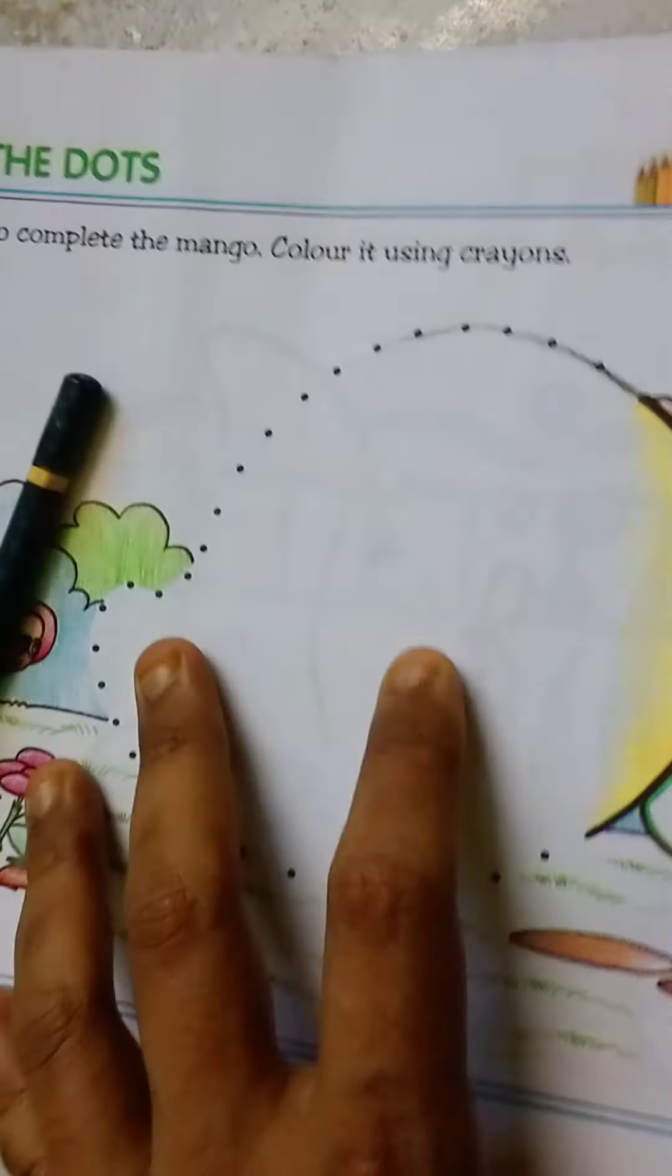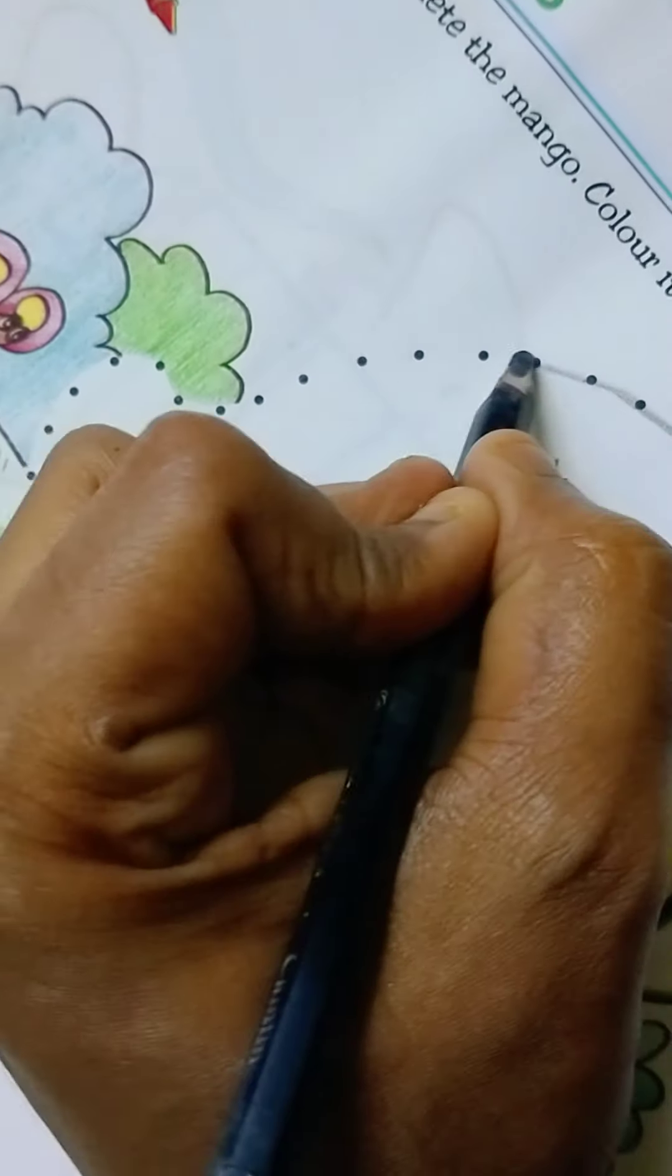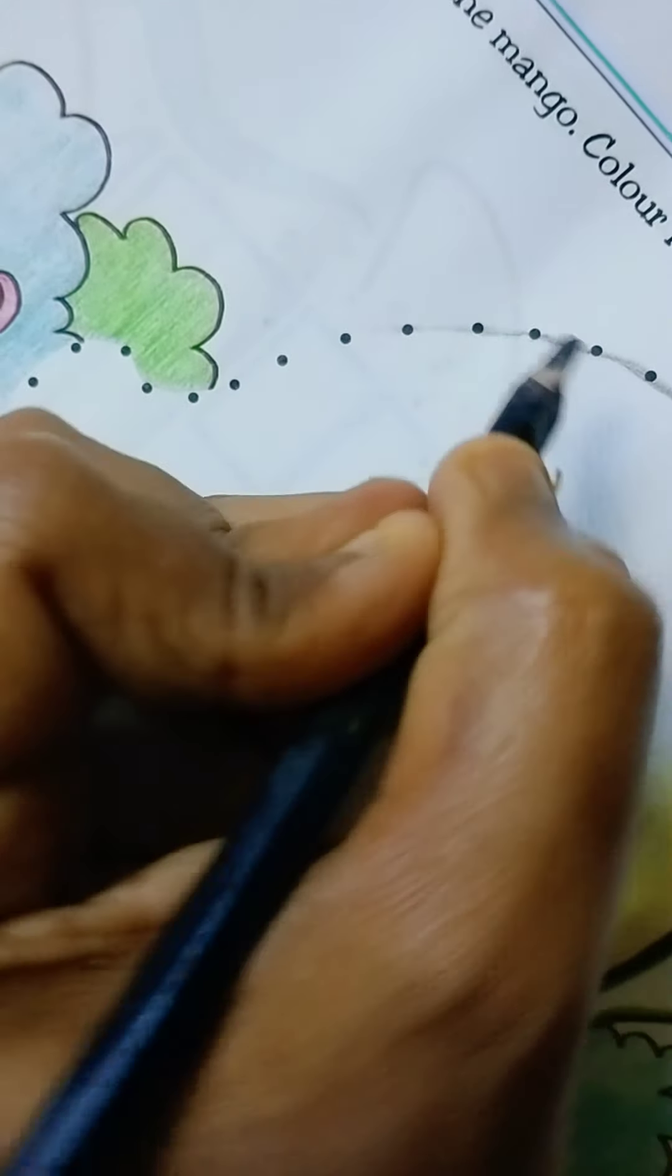So students, this is our painting and first we are going to join the dots. You see our drawing, my drawing. Let's do this.